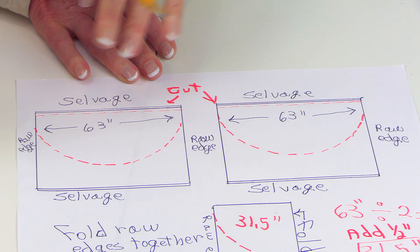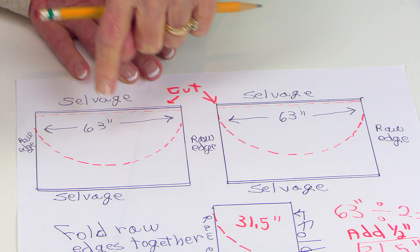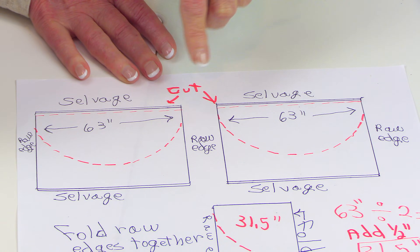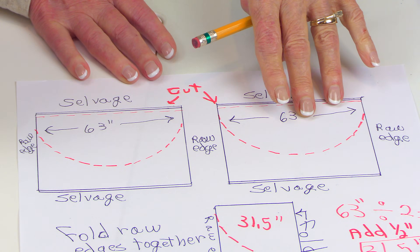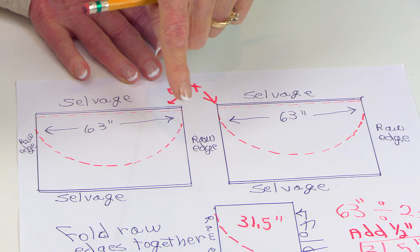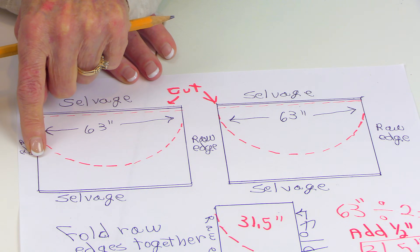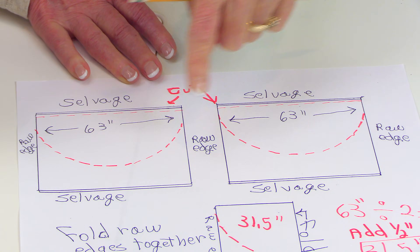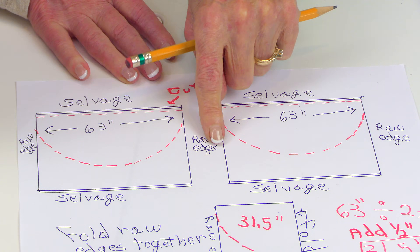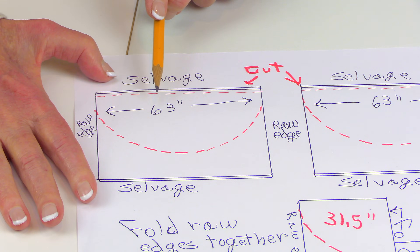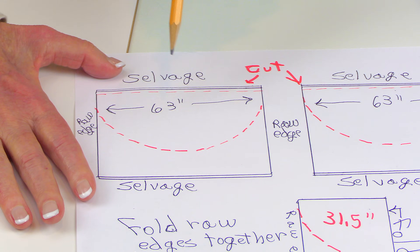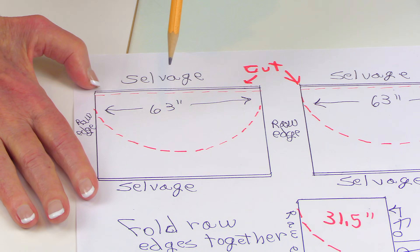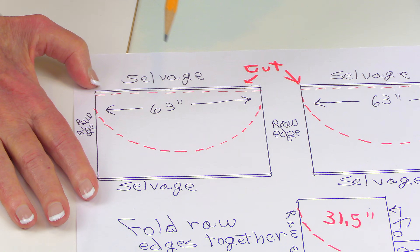Now you're going to take each piece — before you cut into it at all — and bring the raw edges together on both pieces. Now after you've folded your fabric, remember you wanted a diameter of, let's say, 63 inches.